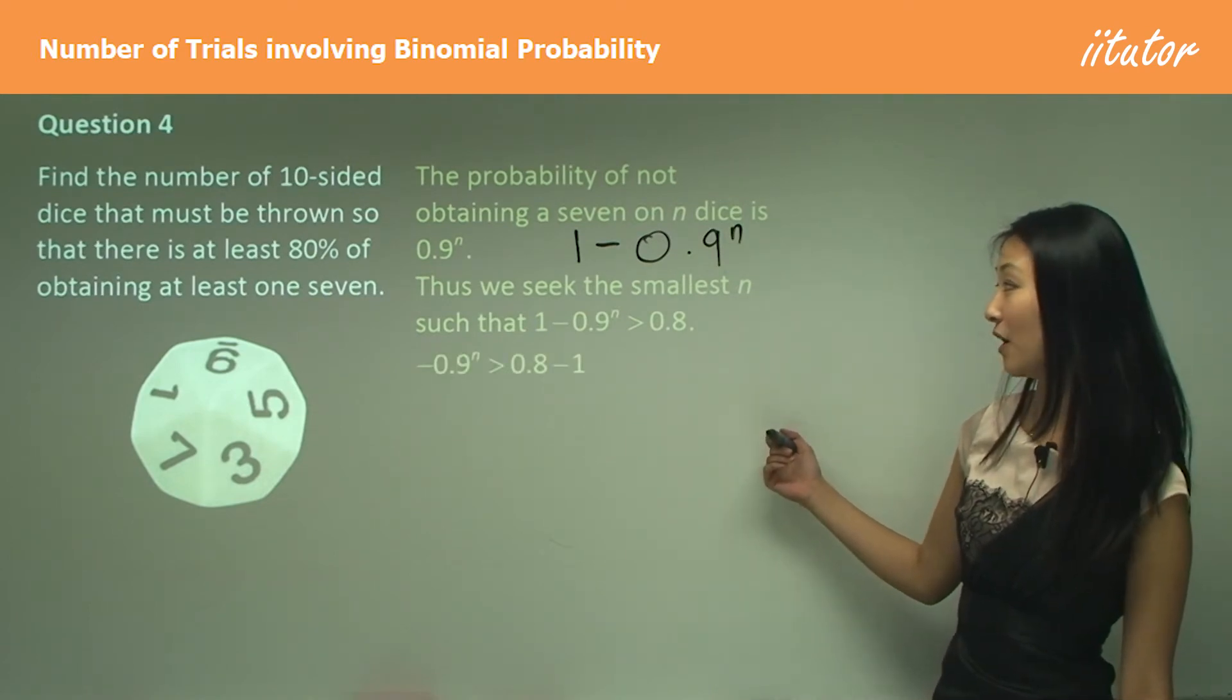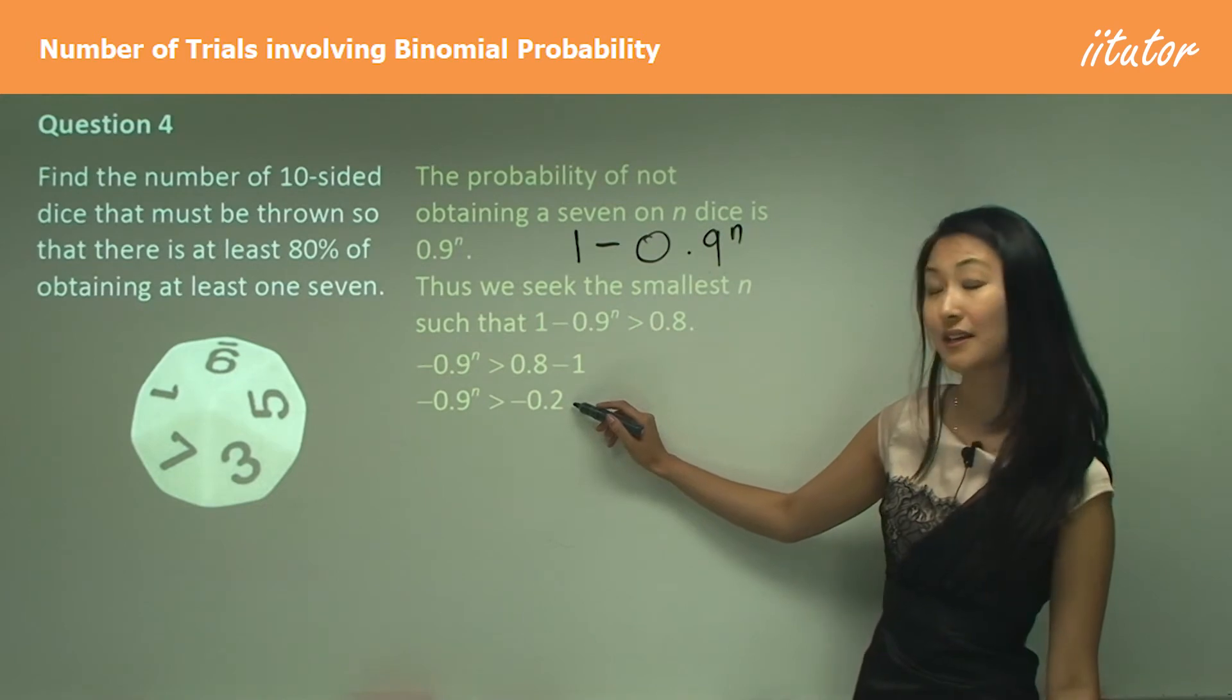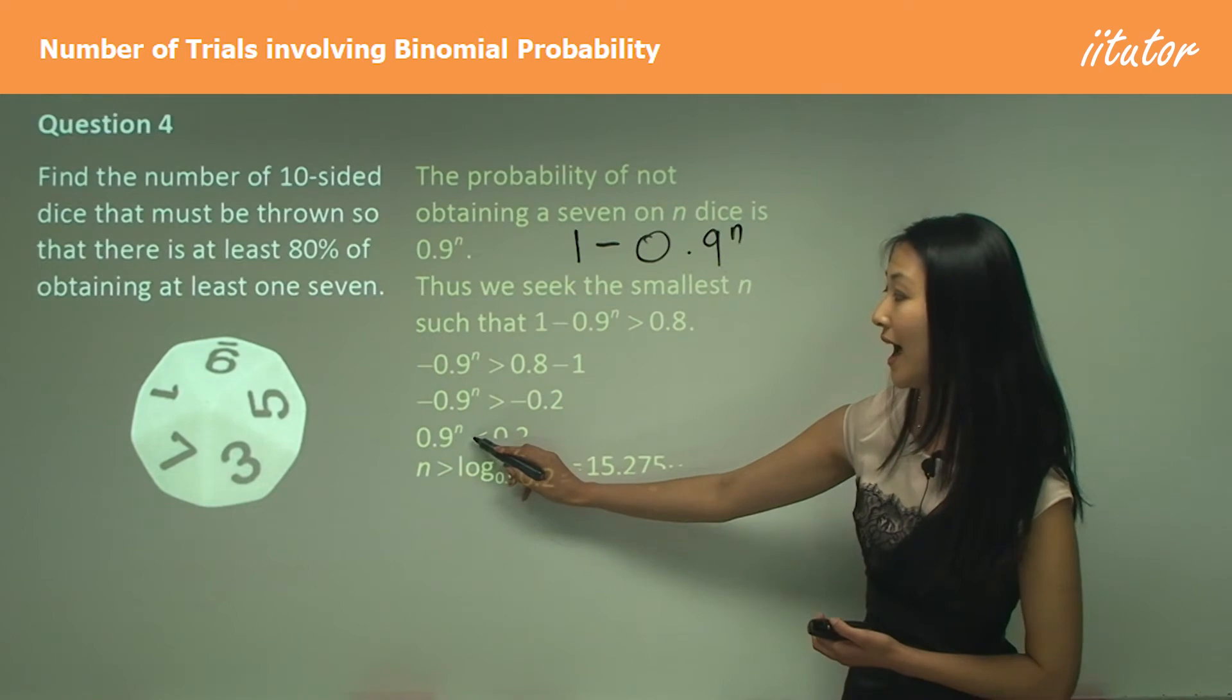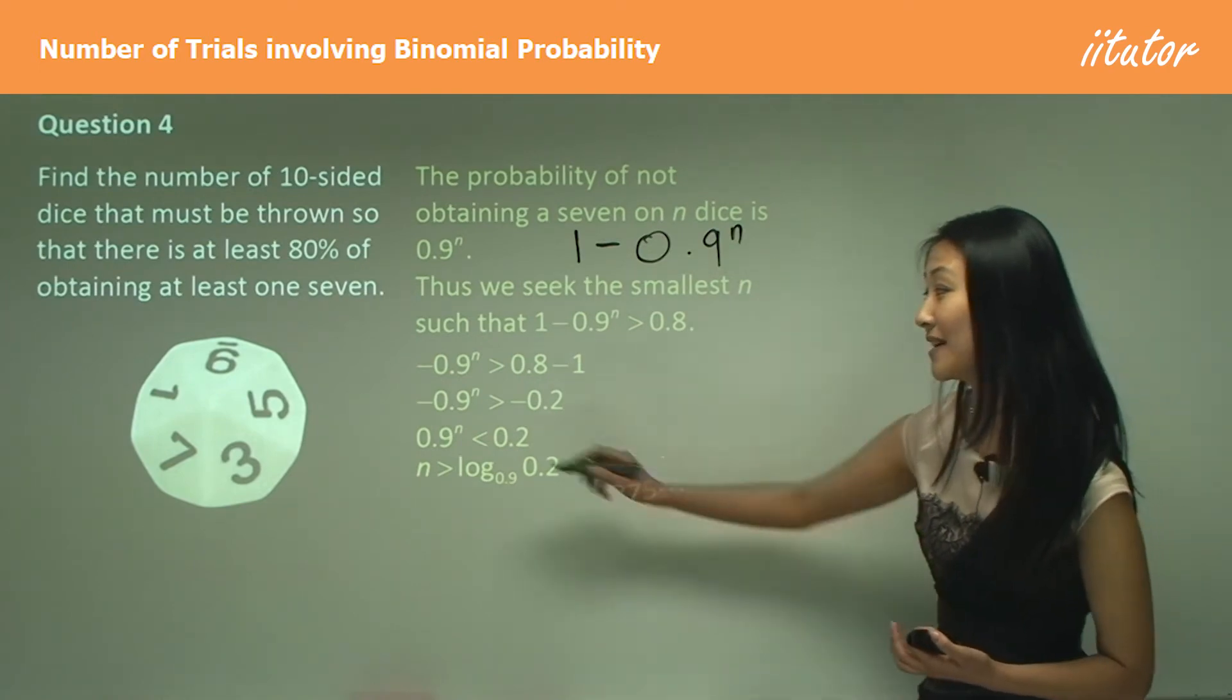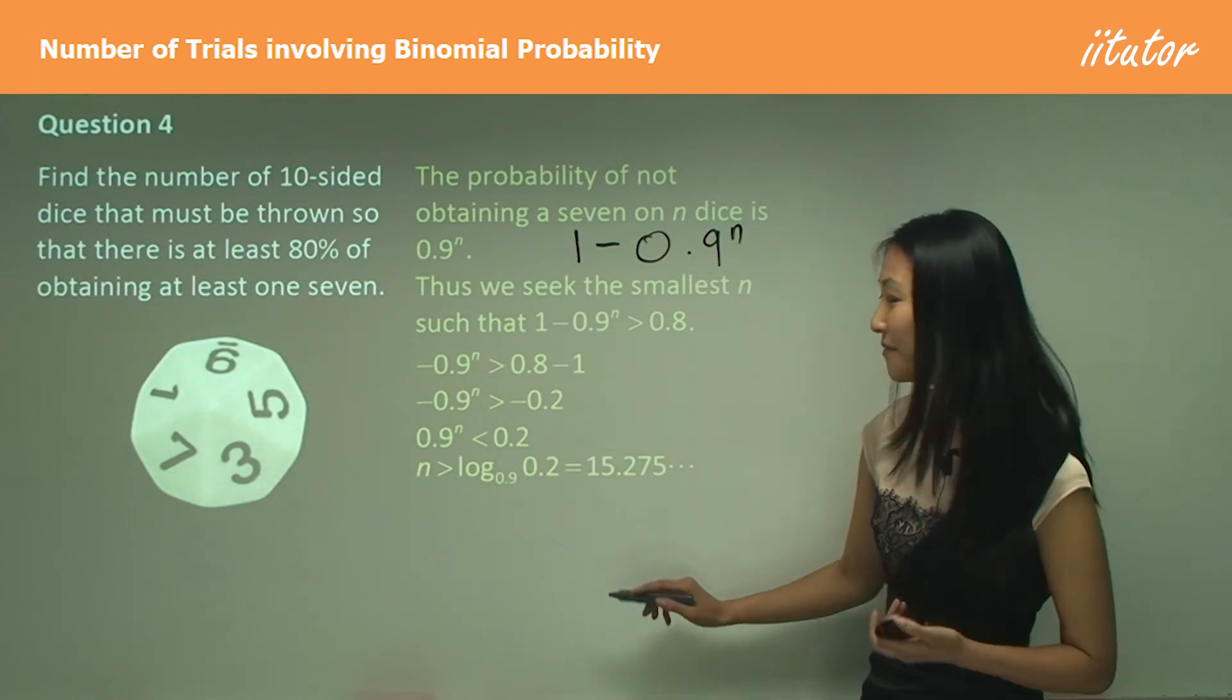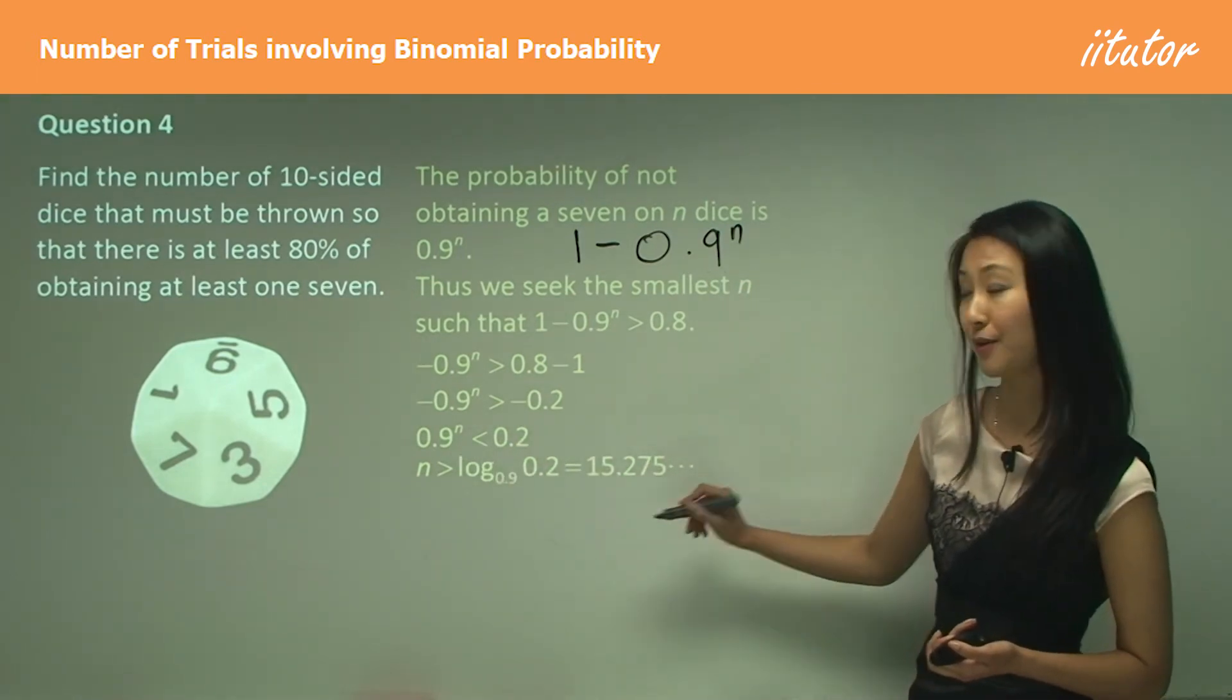Now it's just a matter of solving it. Subtract one from this side, this becomes negative 0.2. Flip the sign, get rid of the negatives, so 0.9 power of n is less than 0.2. Now we have to take the logarithm of that. Because it's less than one, we need to flip the sign again. So it becomes n is greater than log base 0.9 of 0.2.